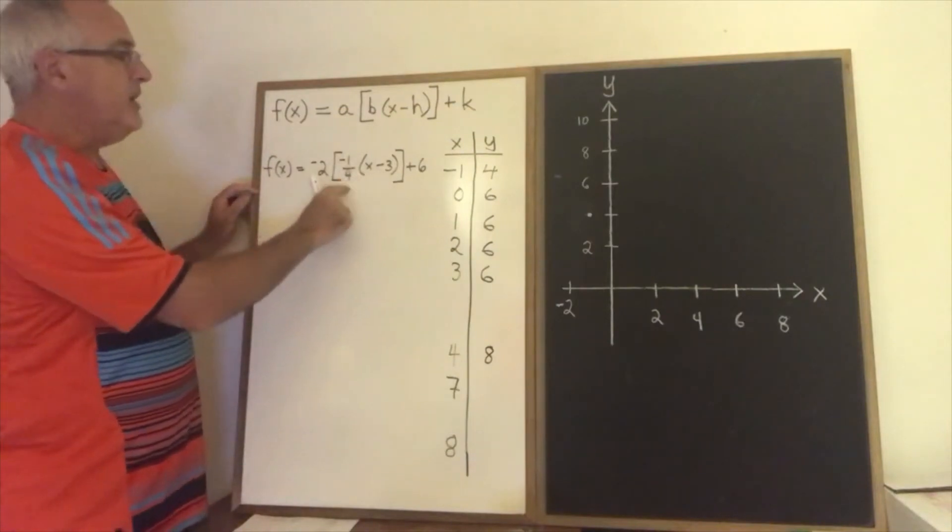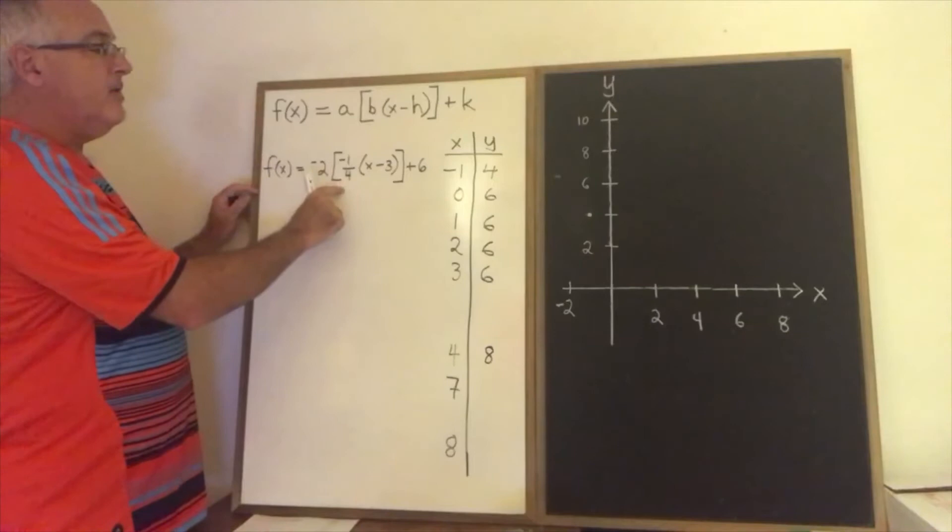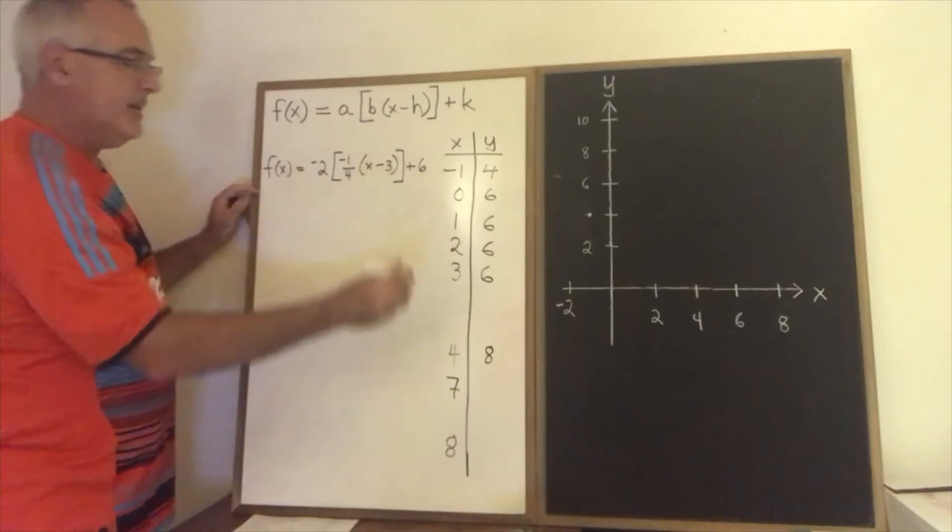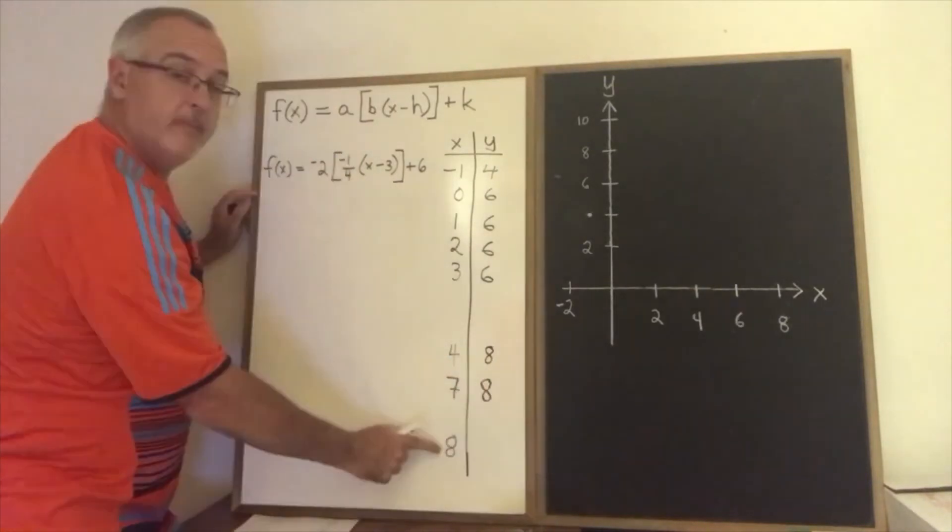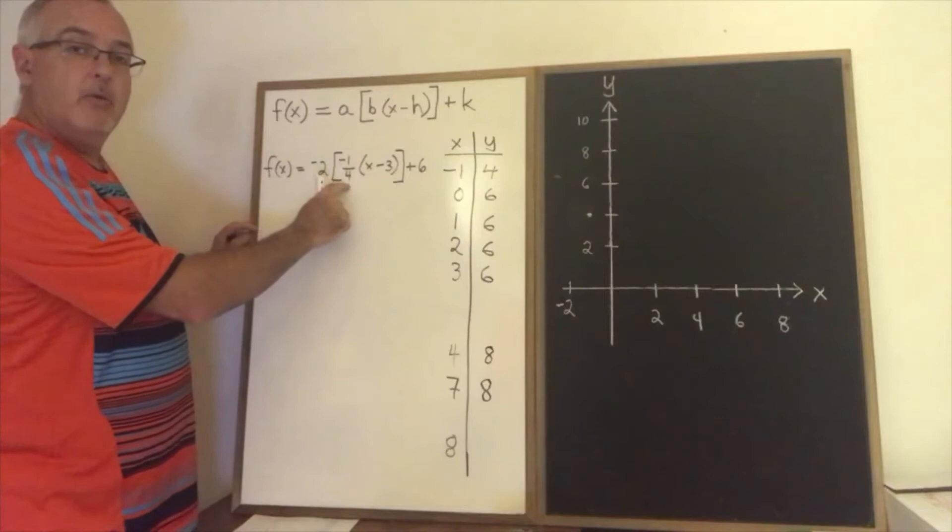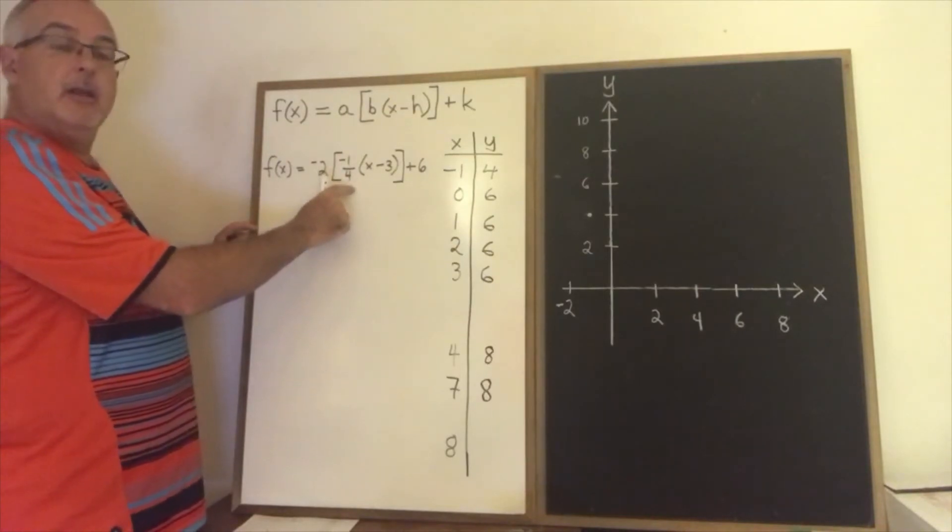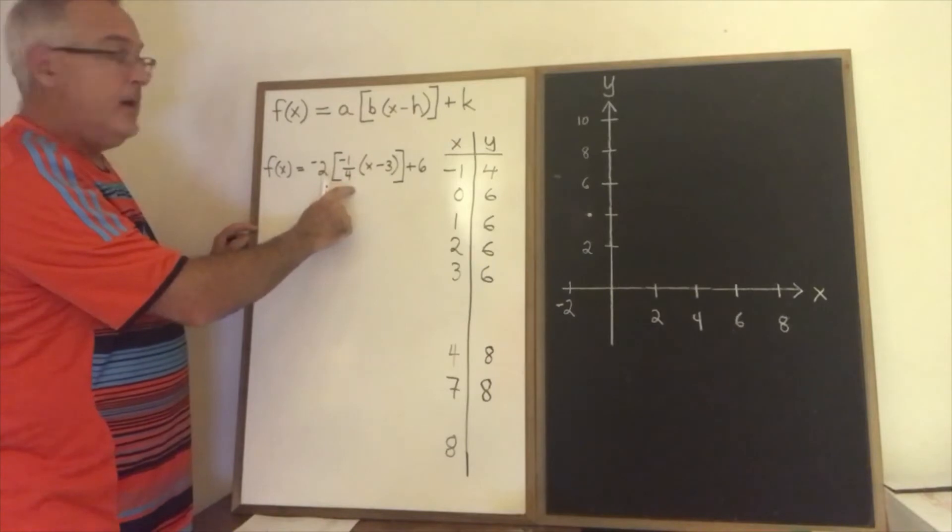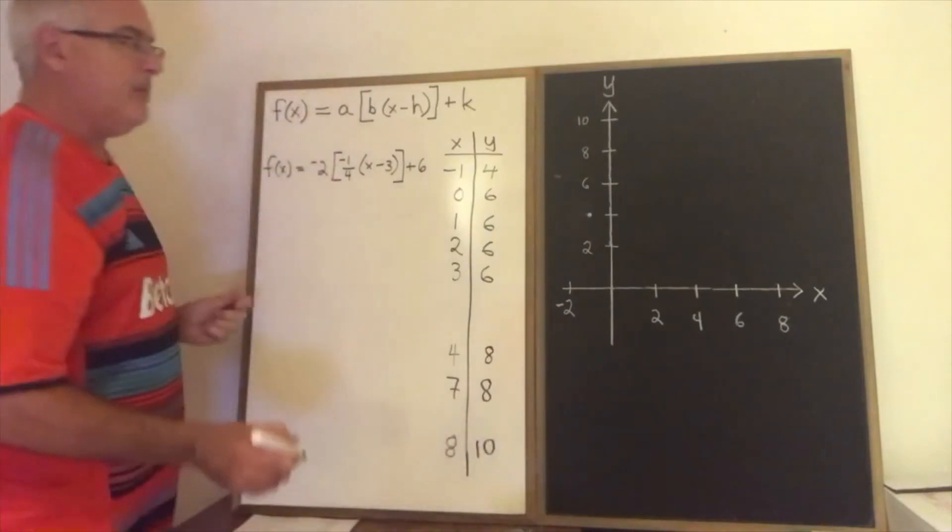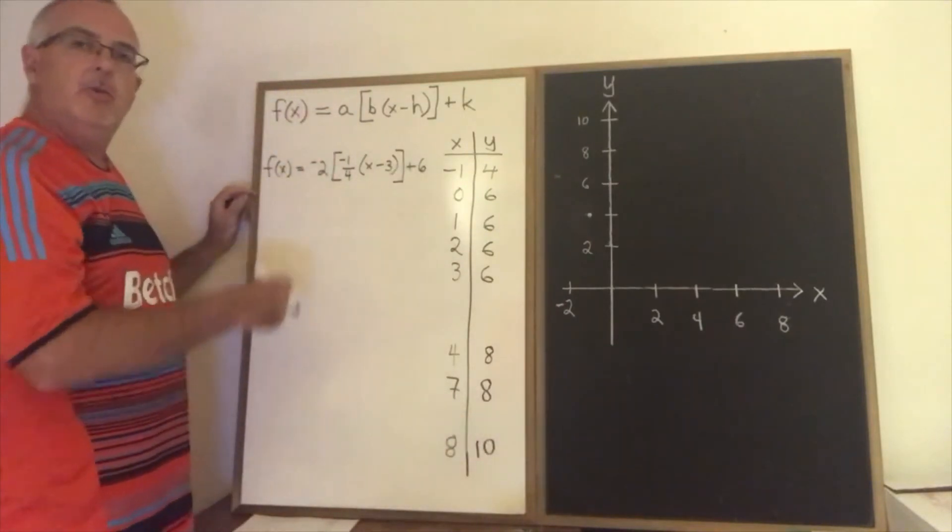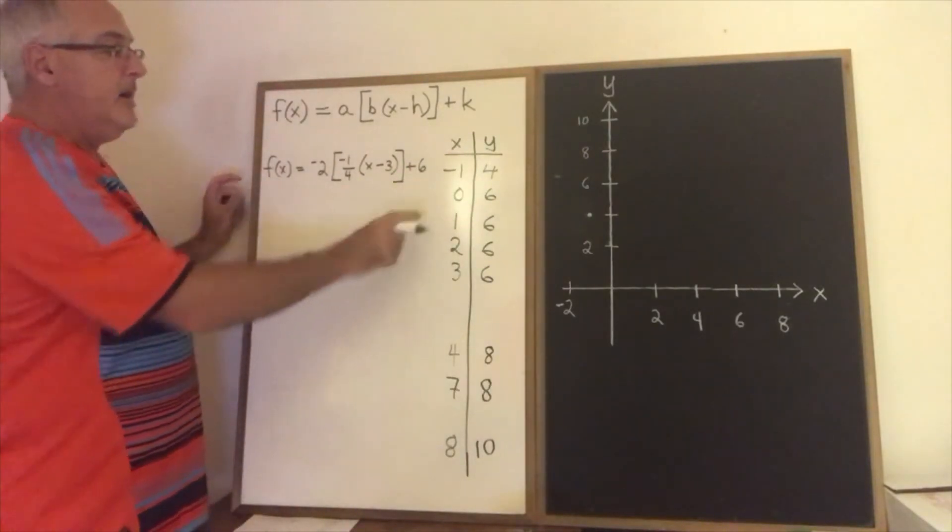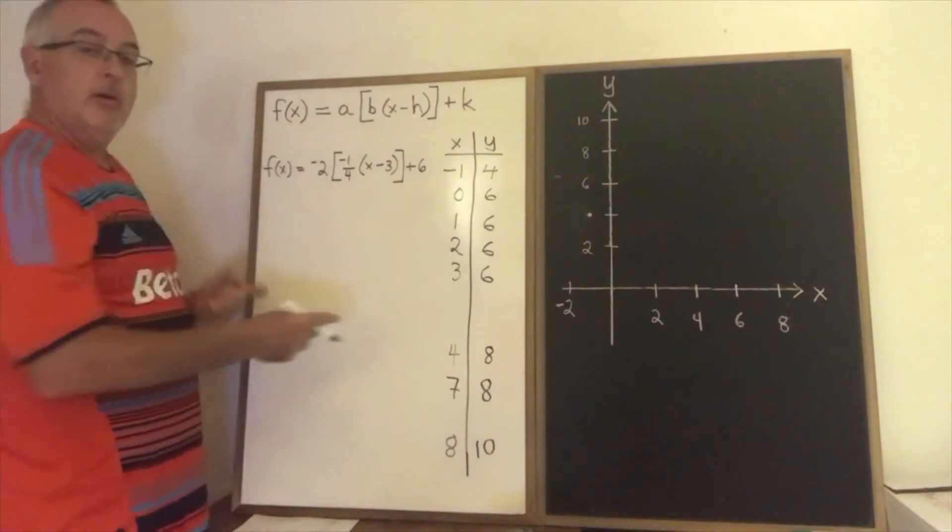7 minus 3 is 4. 4 times negative 1 quarter is negative 1. The greatest integer less than or equal to negative 1 on the number line is negative 1. Negative 1 times negative 2 is positive 2 plus 6 is 8. If x is 8, 8 minus 3 is 5. 5 times negative 1 quarter is negative 5 fourths or negative 1.25. The greatest integer less than or equal to negative 1.25 is negative 2. Negative 2 times negative 2 is positive 4 plus 6 is 10. So we're able to see our steps. We can see that we're jumping up two units on y-axis whenever we climb a step. And we're getting an idea of how long our steps are. This portion of the table values shows that the steps are at least three units in length.